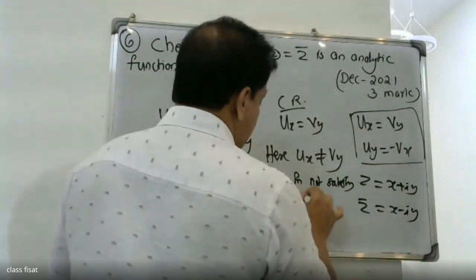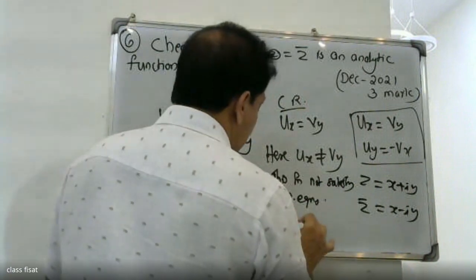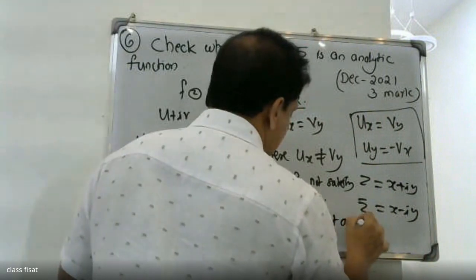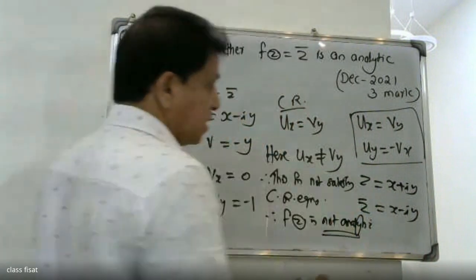Therefore this function is not satisfying the Cauchy-Riemann equations. Therefore f of z is not analytic.